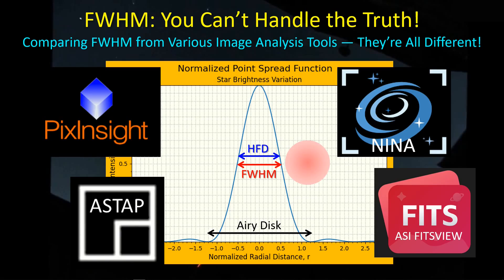Hey guys, welcome back. I thought I'd do a little video here on the full width at half maximum. I'm not going to talk about what it means or where it comes from, but I'm going to talk about some of the different things that affect full width at half maximum, such as the altitude of our target, the eccentricity of the stars, particularly at long focal lengths, how Blur Exterminator affects it, but also how it's presented to us in software such as PixInsight, NINA, ASTAP, and ZWO's ASI Studio FitsView program. It turns out we don't know as much about full width at half maximum of our images as we think we do. Let's take a look.